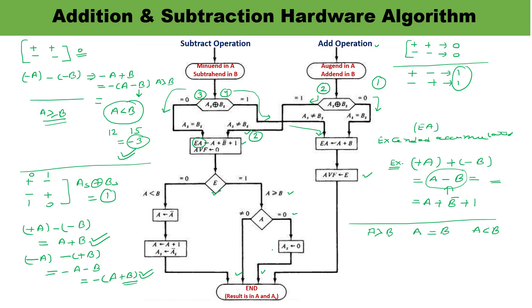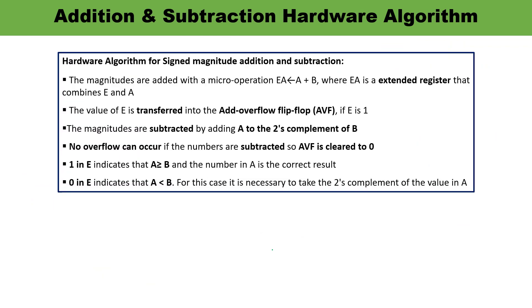To summarize the addition and subtraction algorithm: first check the signs of both numbers, then take their XOR. If XOR is 0, the required operation — addition or subtraction — is performed directly. If both signs are opposite (XOR=1) and addition is required, subtraction is actually done; if both signs are opposite and subtraction is required, addition is actually performed. This is how the hardware algorithm is designed, as shown in the flowchart for addition and subtraction operations. Thank you for watching.